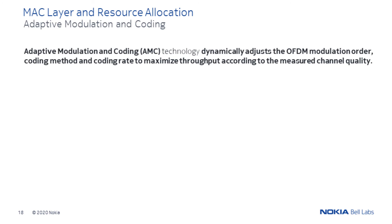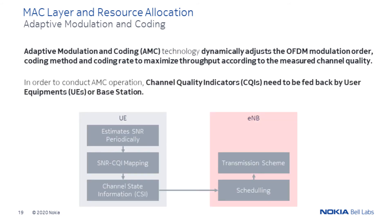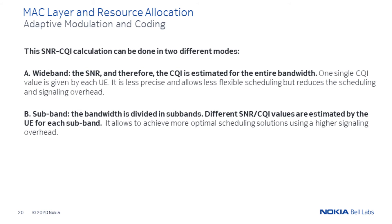A very important step within the resource allocation procedure is adaptive modulation and coding, which dynamically adjusts the OFDM modulation order, coding method, and coding rate to maximize the throughput according to the measured channel quality. This channel quality is continuously reported by the base station and UE using the Channel Quality Indicators or CQIs. These CQIs are estimated from the SINR estimation and are used to select the most appropriate modulation and coding scheme. The estimation of CQIs can be done in two different modes — wideband or subband. In the wideband mode, the SNR and consequently the CQI is estimated for the entire bandwidth, and one single CQI value is estimated for each UE. It is less precise, allowing less flexible scheduling, but considerably reduces the scheduling and signaling overhead.